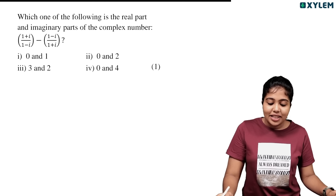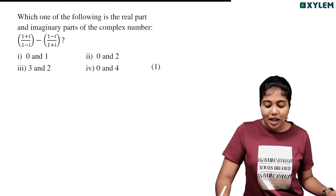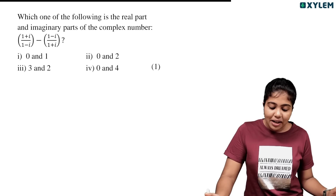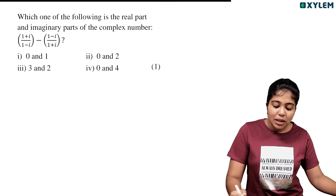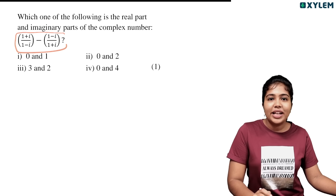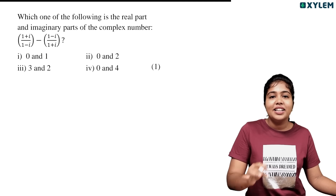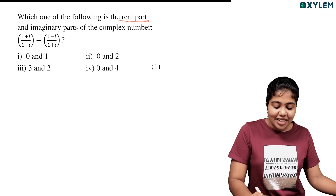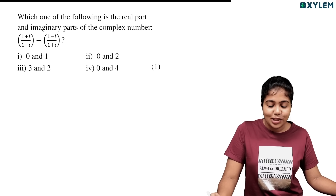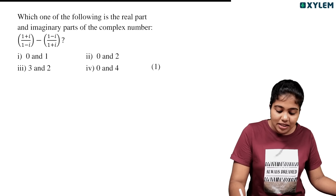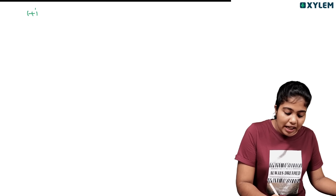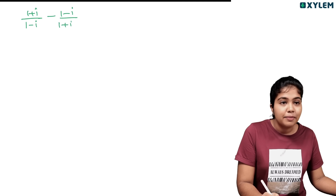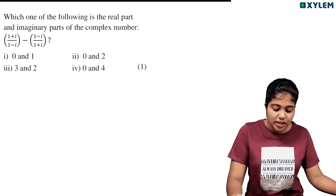Which one of the following is the real part and imaginary part of the complex number: (1+i)/(1-i) minus (1-i)/(1+i)? We need to simplify this expression and put it in A plus iB form. This is the question.